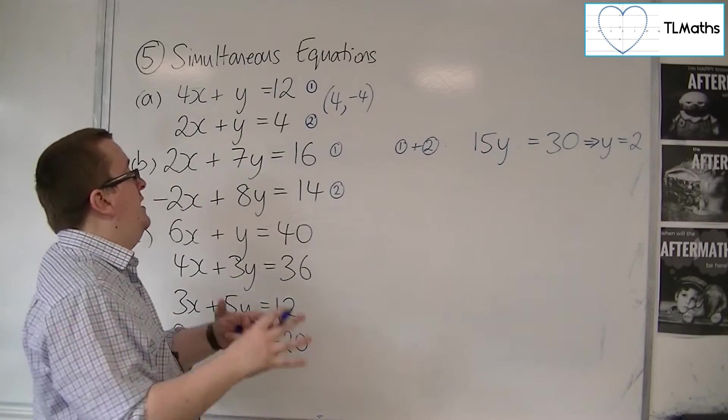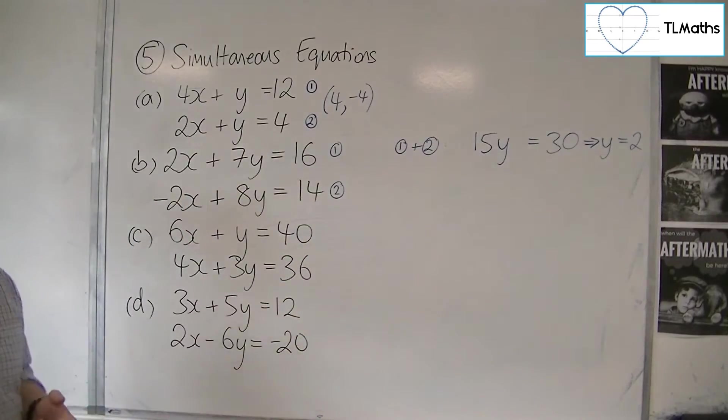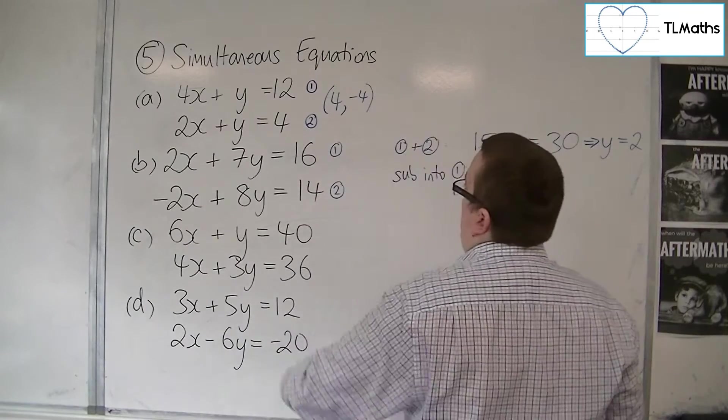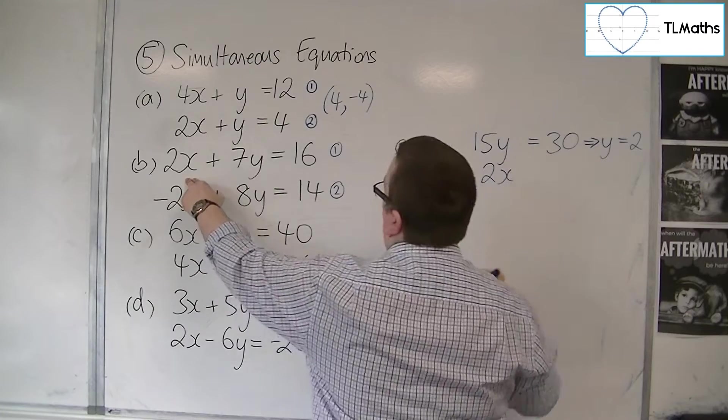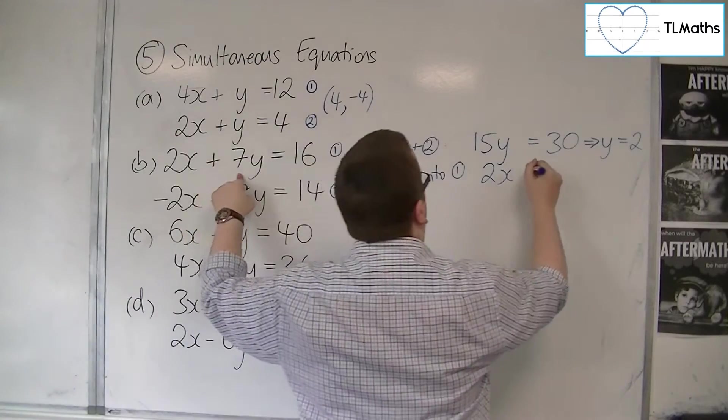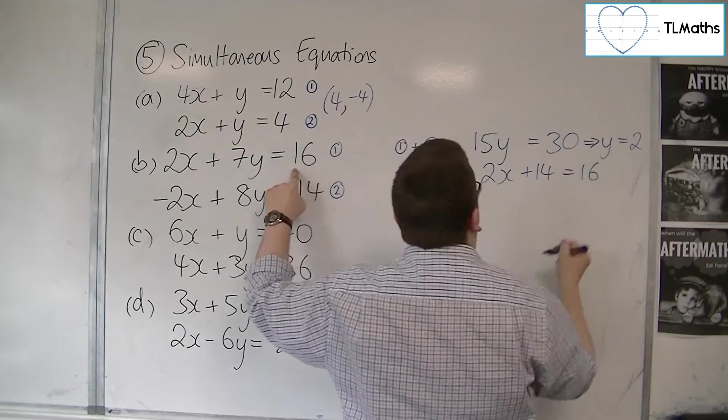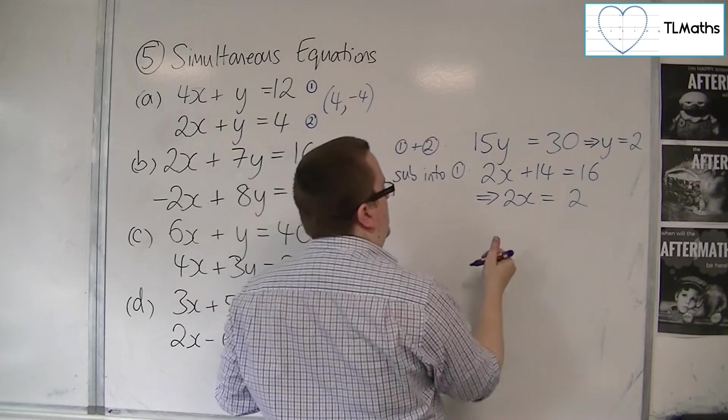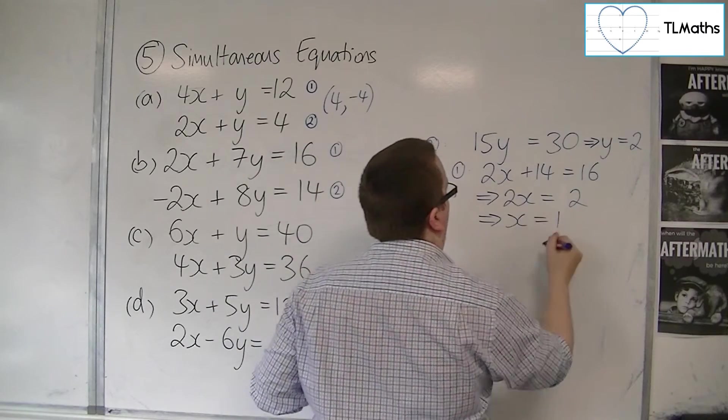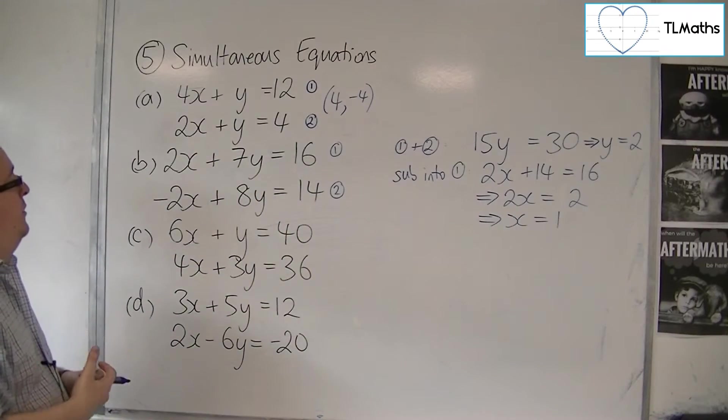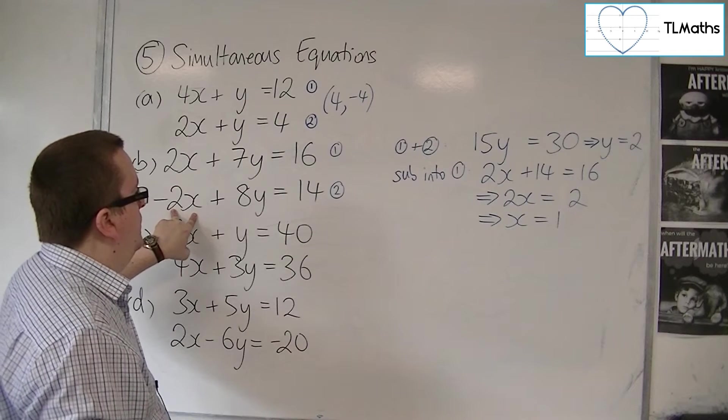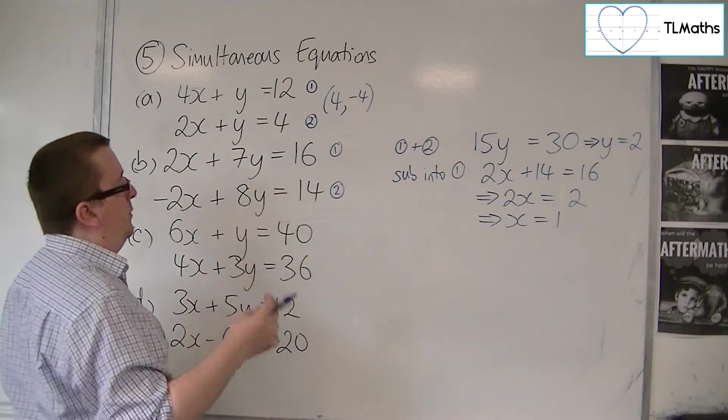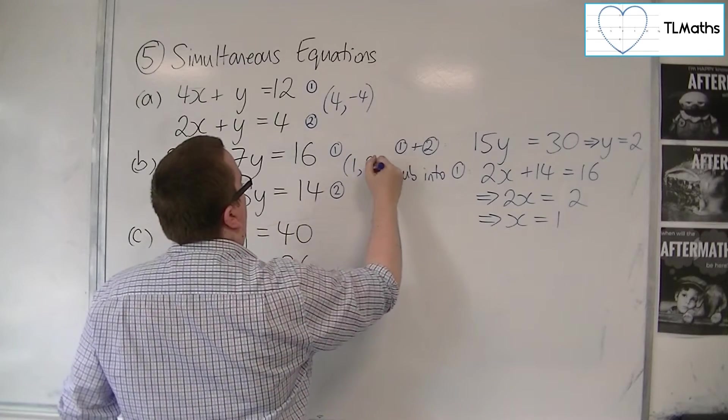We then substitute that into one of the two equations. It doesn't really matter which one you use in this case because they're quite similar. So I'm going to substitute into 1. So we have 2x. We don't know what that is yet. Plus 7 lots of y. So 7 2s is 14. Must be equal to 16. Now you can take 14 from both sides. Not 12, 2 rather. And 2x equals 2. So divide both sides by 2. So x is 1. So then you can check in number 2. Minus 2 times 1, so minus 2. Plus 8 lots of 2, so minus 2 plus 16 is equal to 14. So it works. So we have 1 for x and 2 for y.